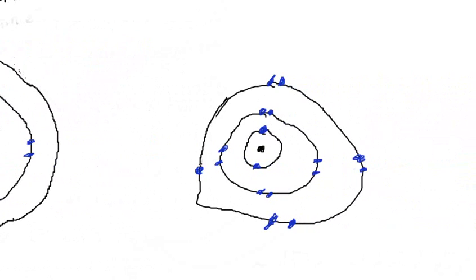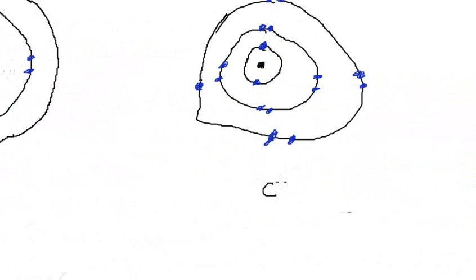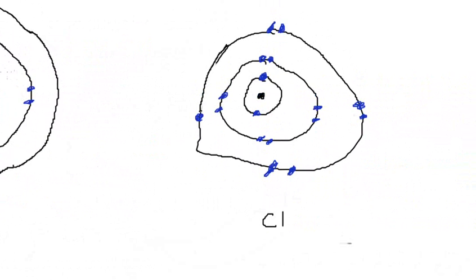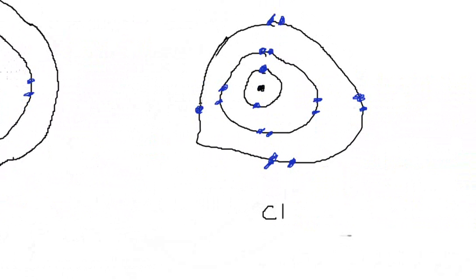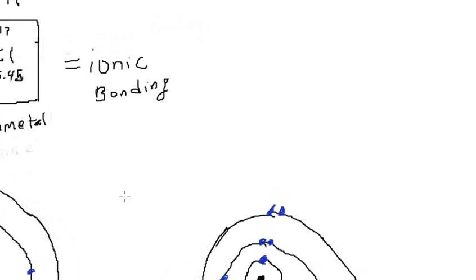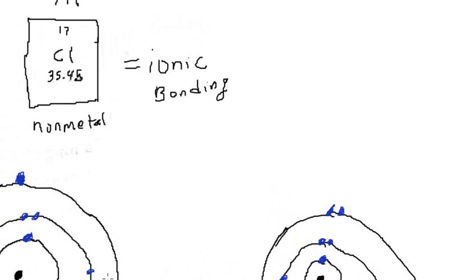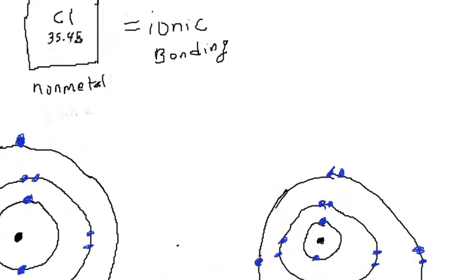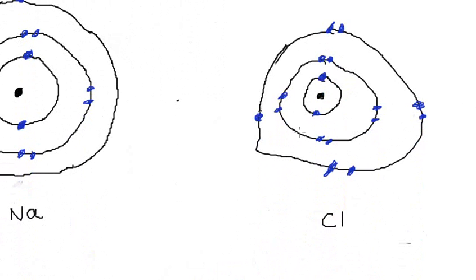Over here, this represents chlorine. Chlorine has a total of 17 protons, and if you have 17 protons you also need to have 17 electrons.